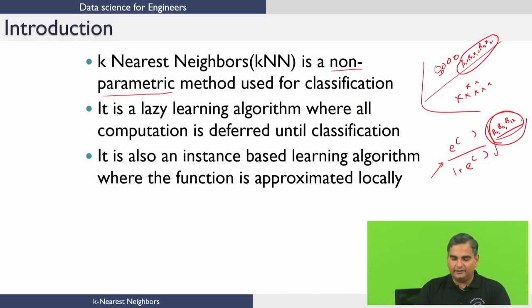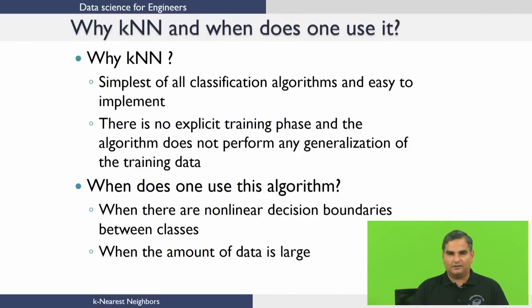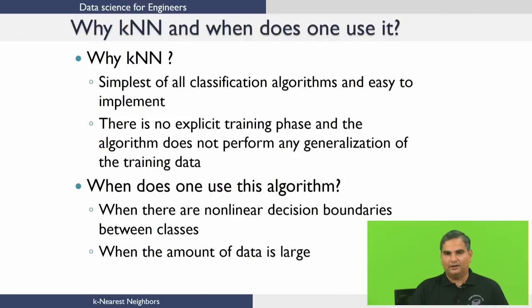It is also called instance-based learning where the function is approximated locally. We will come back to this notion of locality as I describe the algorithm. As I started this lecture, I mentioned it is the simplest of classification algorithms — very easy to implement. There is no explicit training phase and no generalization from training data. I just give the data and then wait until you give me a new data point to say what class it should belong to.